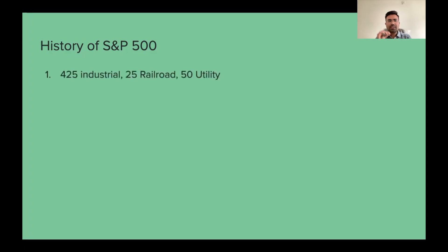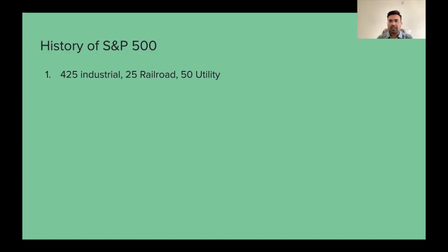Initially, when the S&P 500 was created, there were 425 industrial companies and 50 utilities companies. In the industrial sector, there were oil and gas companies. So those were the types of stocks included.